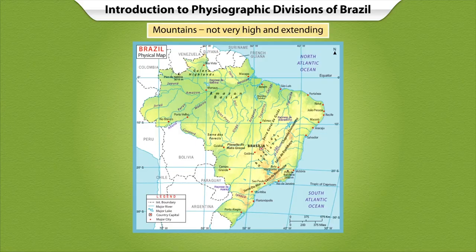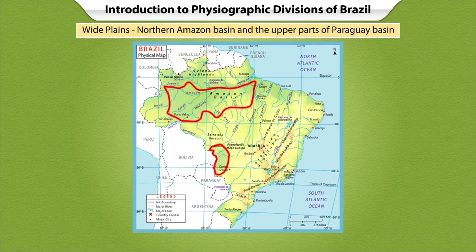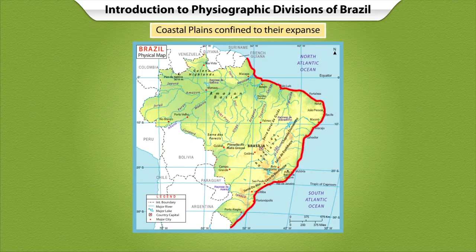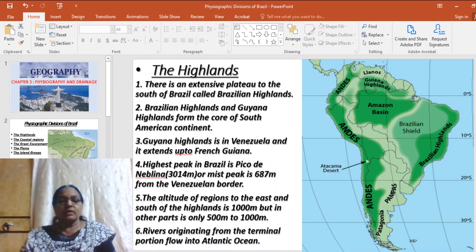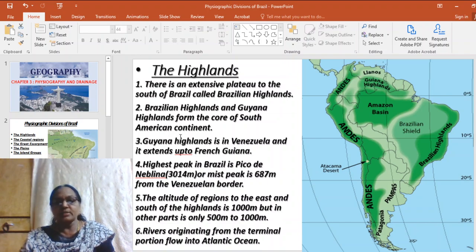The map of Brazil clearly shows that the mountains are not very high. Long, extending wide plains are found in the northern Amazon basin and in the southwest along the upper parts of the Paraguay basin. The coastal plains are confined to a limited expanse. Now let us look at the highlands.